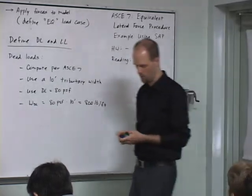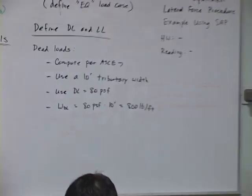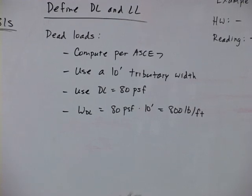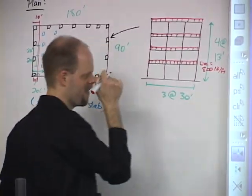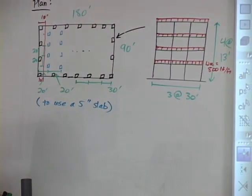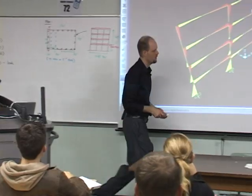So we'll put 800 pounds per lineal foot as our W dead load equals 800 pounds per foot. And we'll do that on each floor.